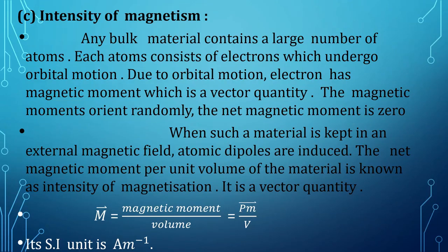If you take a bulk material with a large number of atoms, each atom consists of electrons which undergo orbital motion. This gives rise to a magnetic moment, which is a vector quantity. In general, these magnetic moments are randomly oriented, so the net magnetic moment is zero.